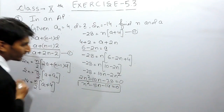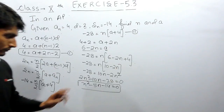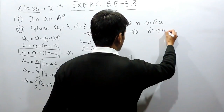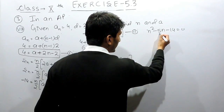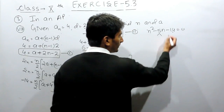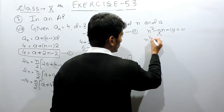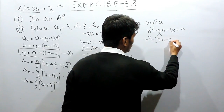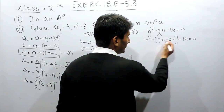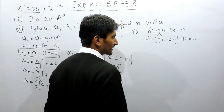This is the quadratic equation. To solve it, we split the middle term into two parts such that their product is 14 and their difference is 5. Clearly, those two numbers are 7 and 2, since 7 multiplied by 2 is 14 and their difference is 5. So we split the middle term into 7n and 2n.